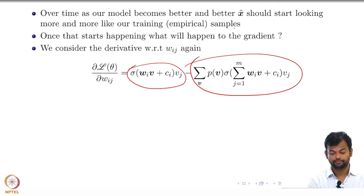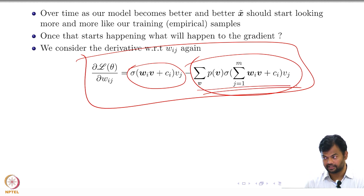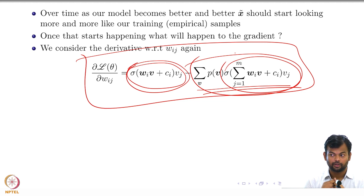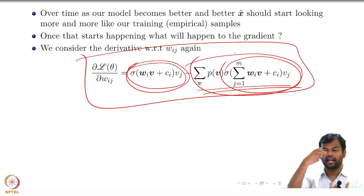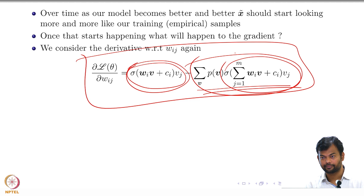As the model becomes better, V tilde should start looking more and more like your training samples. Once that starts happening, what will happen to the gradient? It is a difference of one sigmoid and another sigmoid. Over time, as your model becomes better, these two terms are going to cancel out each other — because given the image, you computed a hidden representation and should get the same image back if your model has learned well. So as you reach convergence, your gradients become smaller and smaller and your parameters stabilize.